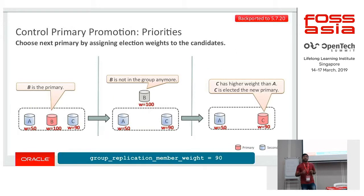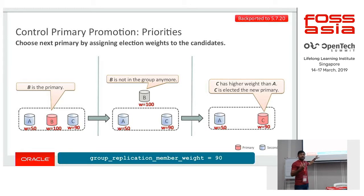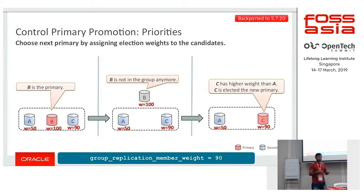I can also increase the priority for a particular member so that when any member goes down, the other selected member gets picked up. For example, with three members A, B, C — member B is primary and A and C have different weight values. I have decided that if member B goes down, then automatically C should become primary. When that member goes out of the group, C will be elected as new primary. For that I can use the variable group_replication_member_weight and set values accordingly. By default it is set to 50 throughout the group.